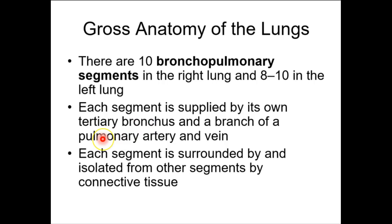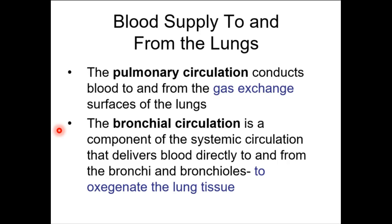Pulmonary arteries follow those airways very consistently. It's actually not true for veins, but your textbook says it is, so we'll go with it. In our fetal pig dissection today, we can look for the bronchus, a blood vessel, and a vein more or less following that structure — they travel together in a tree.